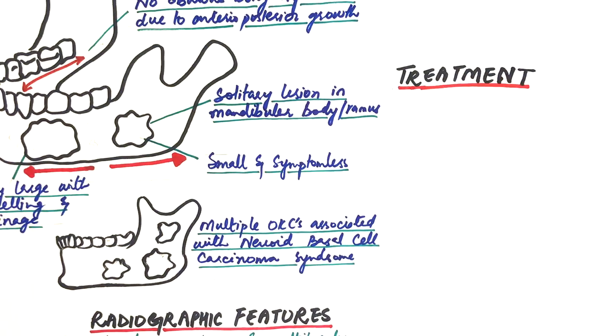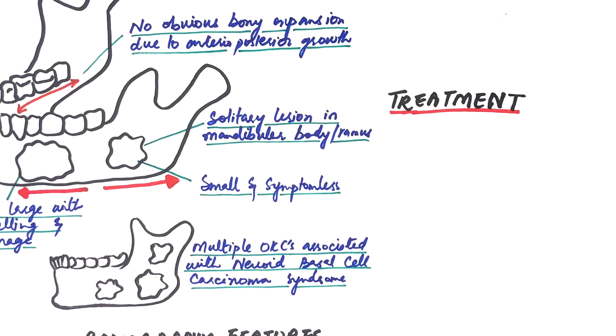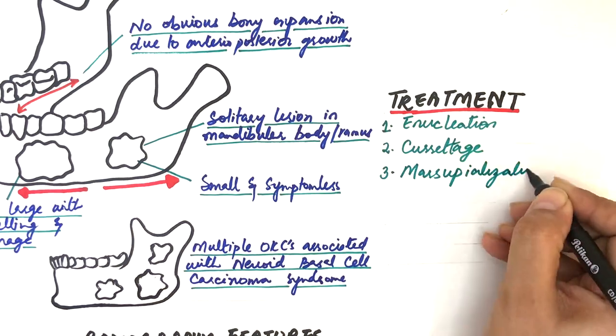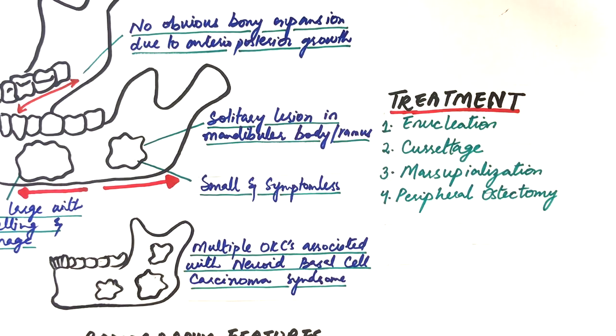The treatment options of an OKC range from simple enucleation and curettage to marsupialization, peripheral ostectomy, and bony resection of the jaws.